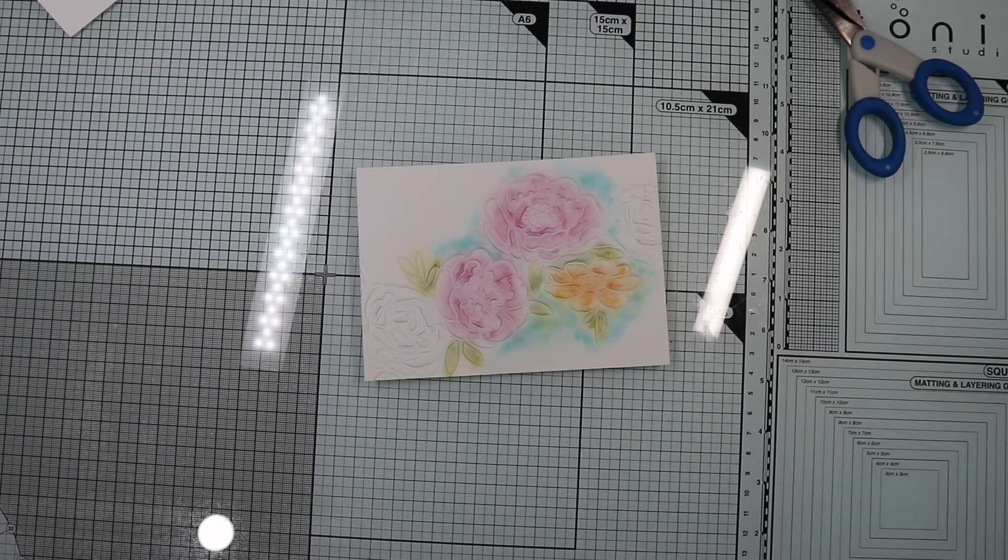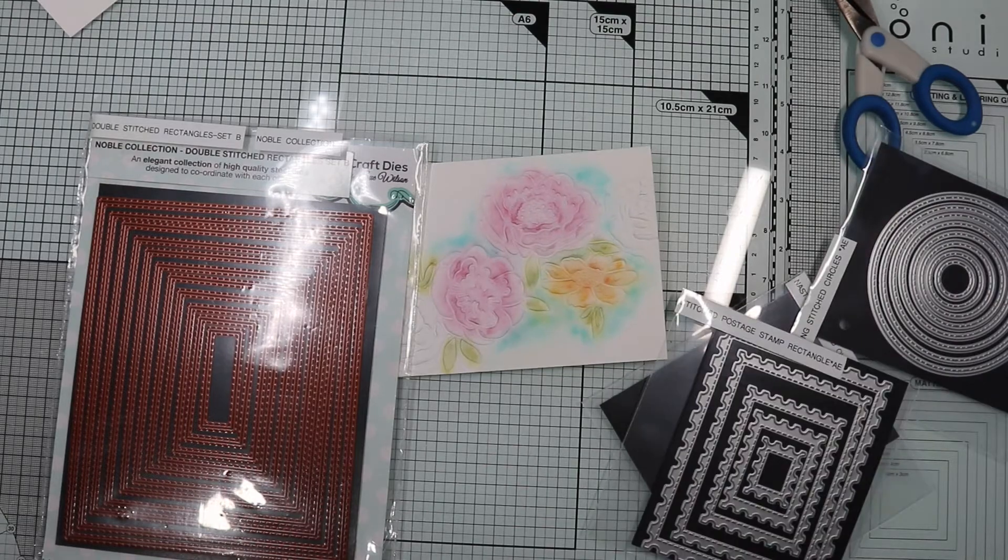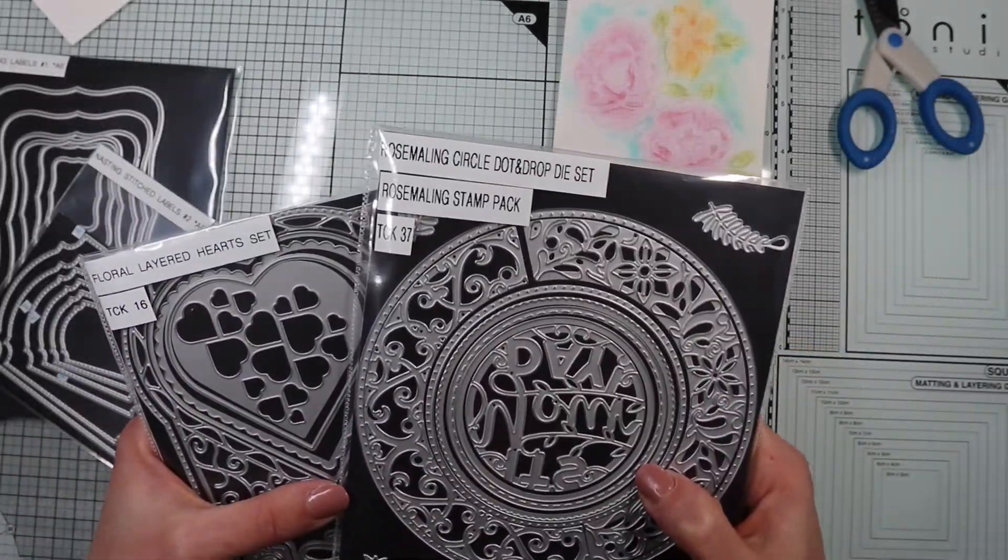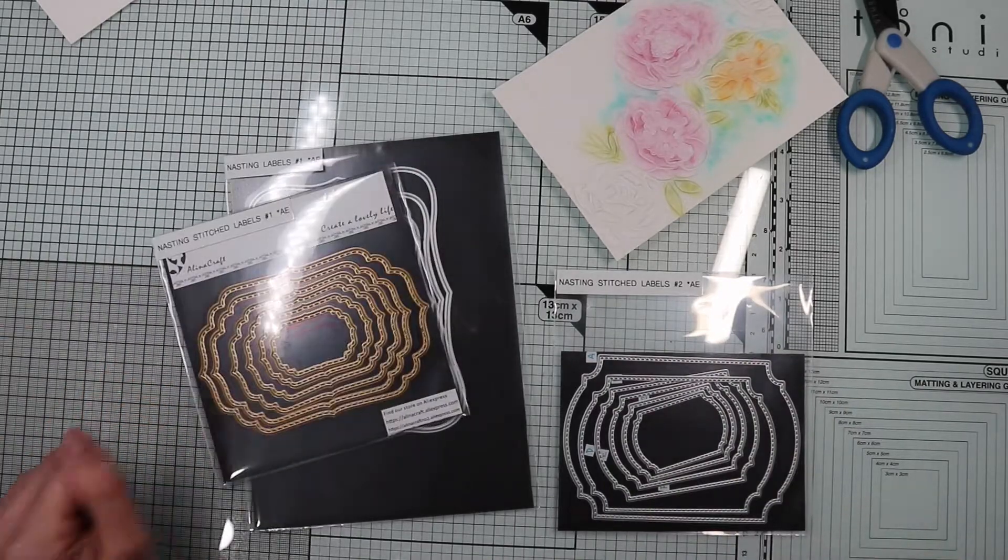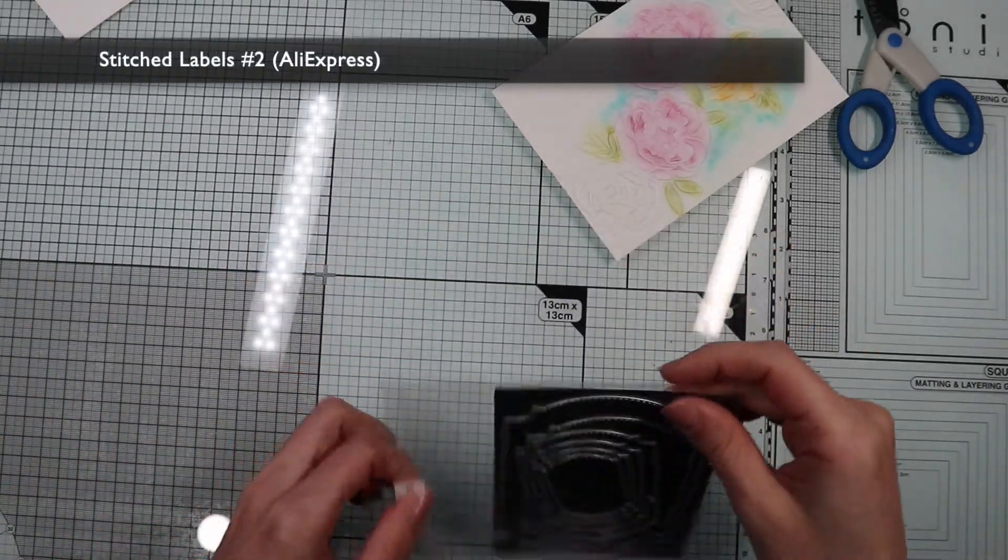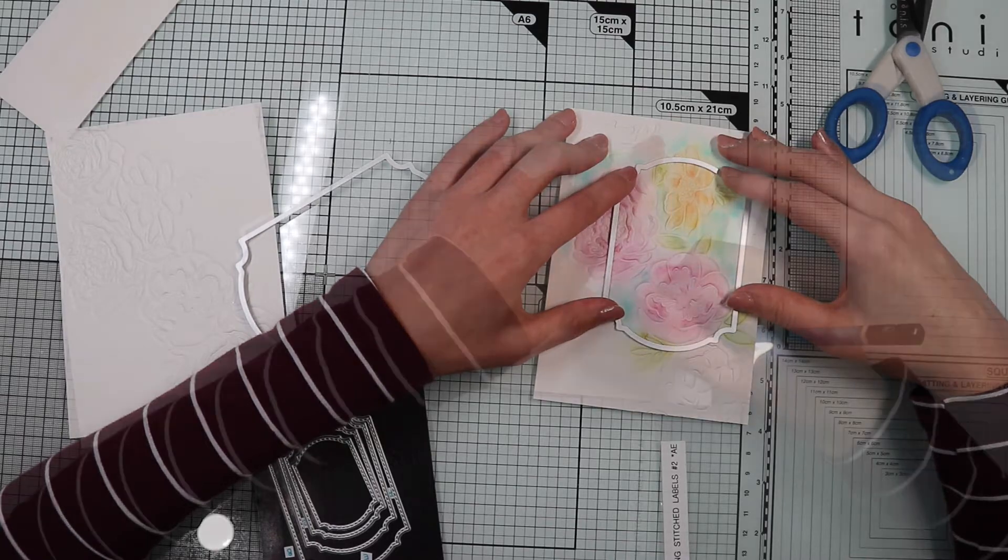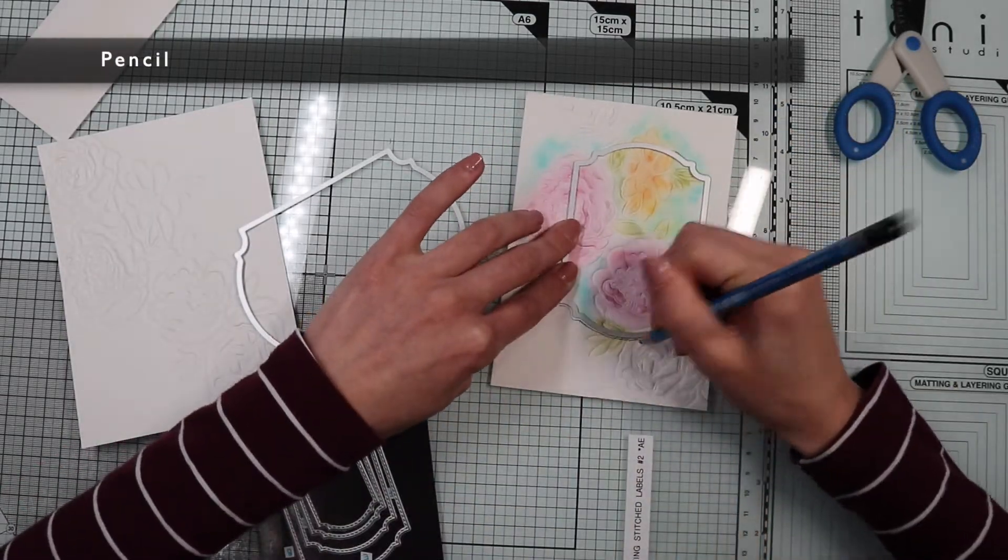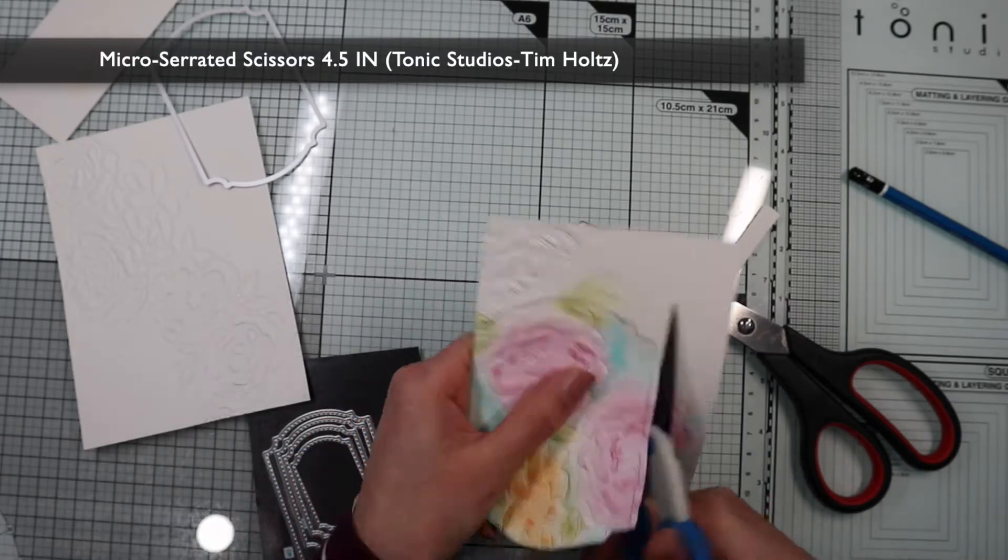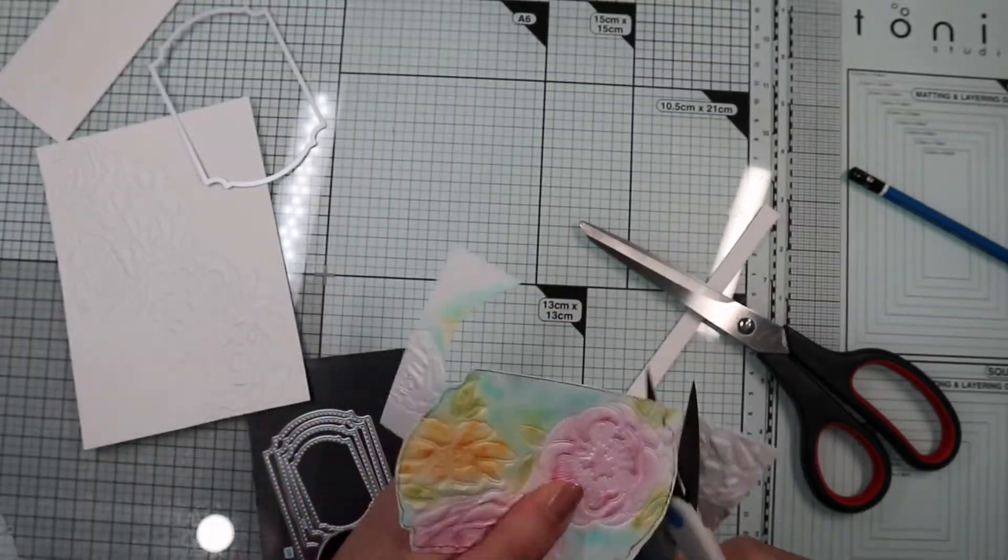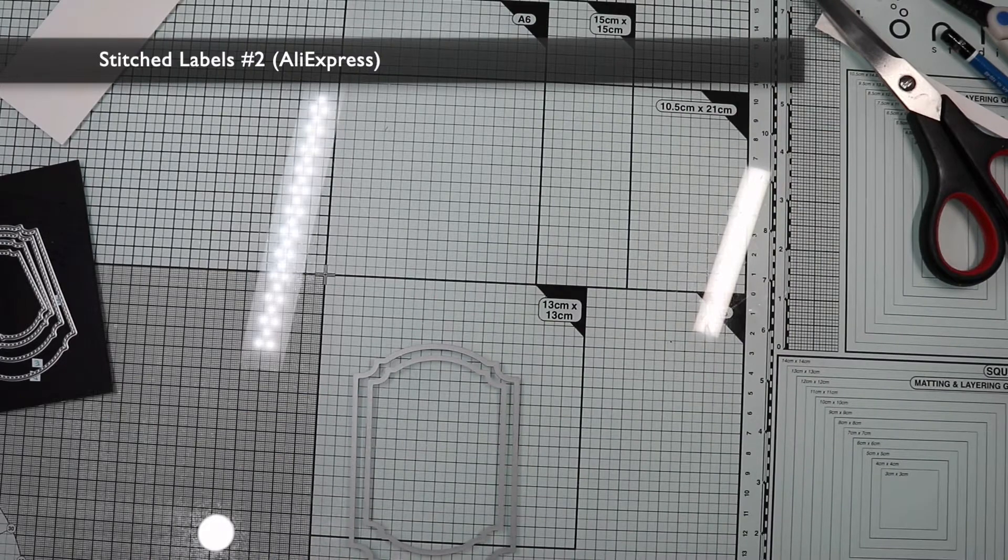To create a frame, you can use any nesting die that you have in your stash. I'm going for some labels. I'm going to choose the most suitable size based on the part of the design that I'd like to use. With a pencil, I'm going to mark the borders of the image that I want to use, and cut out following the lines, also leaving a small border.